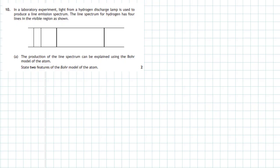Question 10 from the 2018 Higher Physics Section 2. In a laboratory experiment, light from a hydrogen discharge lamp is used to produce a line emission spectrum. The line spectrum for hydrogen has four lines in the visible region, as shown. These are the lines which appear in the spectrum.